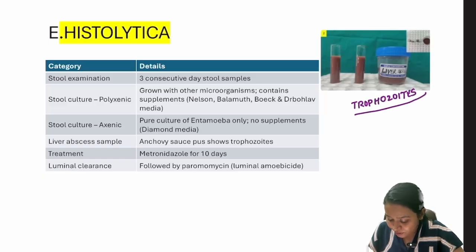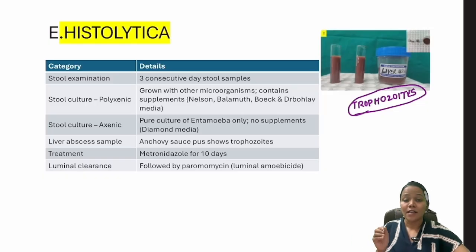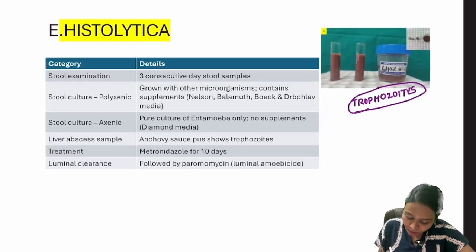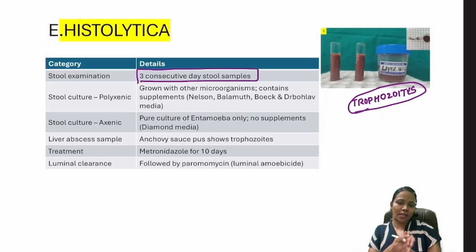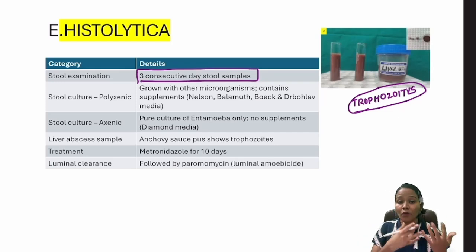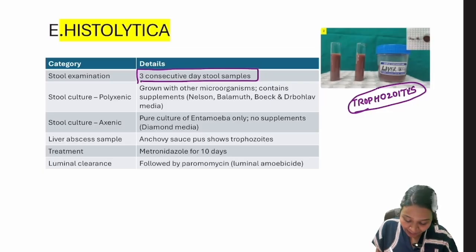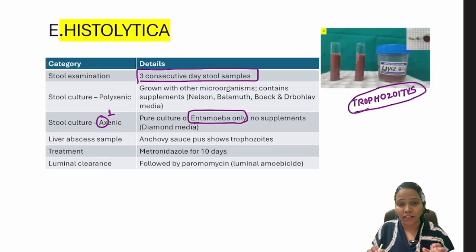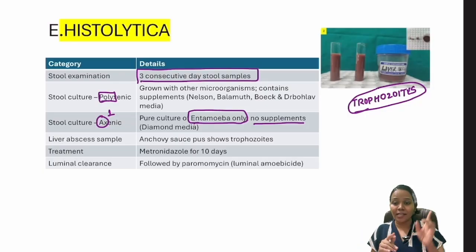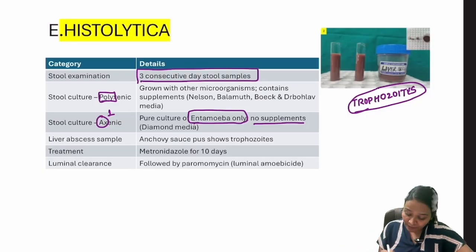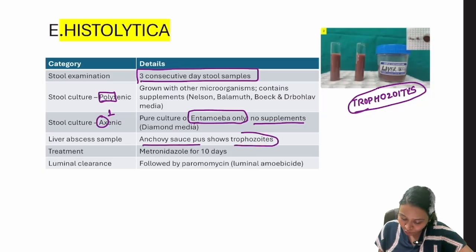For diagnosis, do stool examination — three consecutive stool samples — and look microscopically for trophozoites and cysts. Culture methods include polyxenic (multiple supplements) and axenic (only Entamoeba, no other organisms or supplements — 'A' for alone/first). A liver abscess sample showing anchovy sauce pus contains only trophozoites.